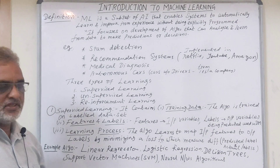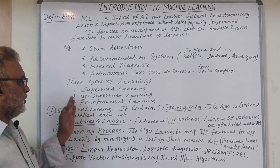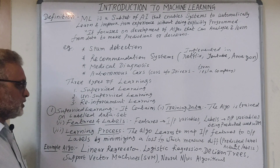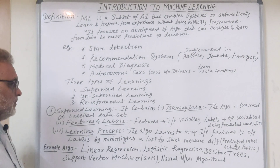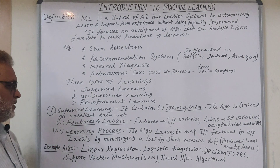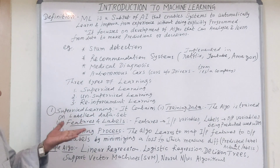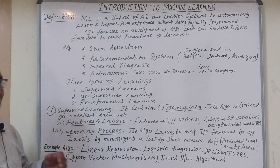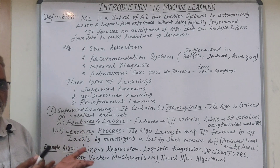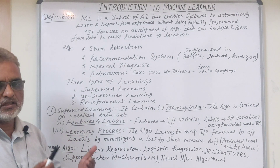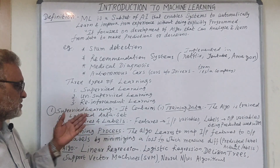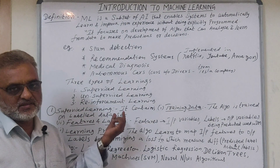There are three types of machine learning. Number one is supervised learning. Number two is unsupervised learning. Number three is reinforcement learning. Supervised learning involves training data — with the help of training data, the algorithm is learned. The algorithm is trained on a labeled dataset.